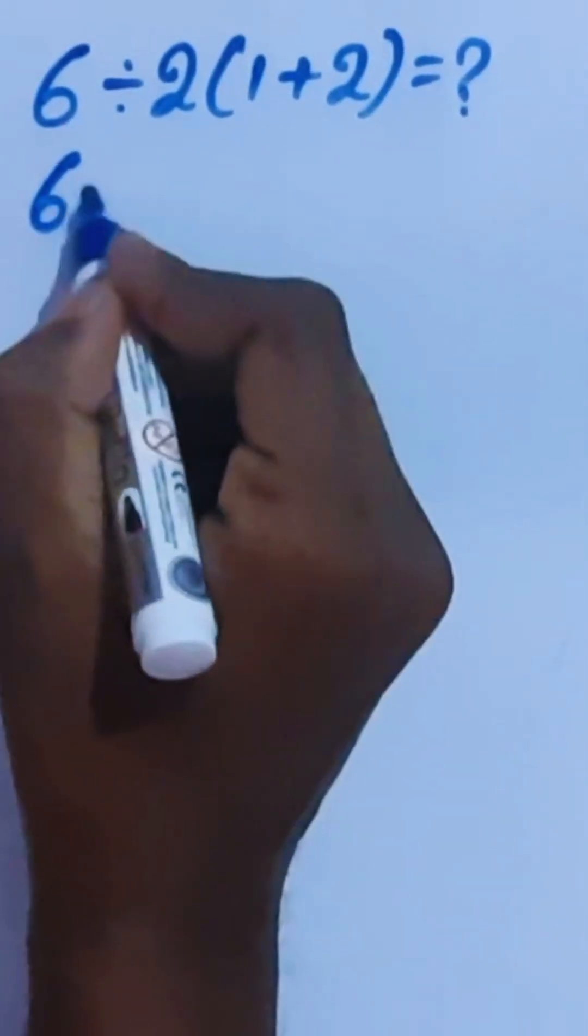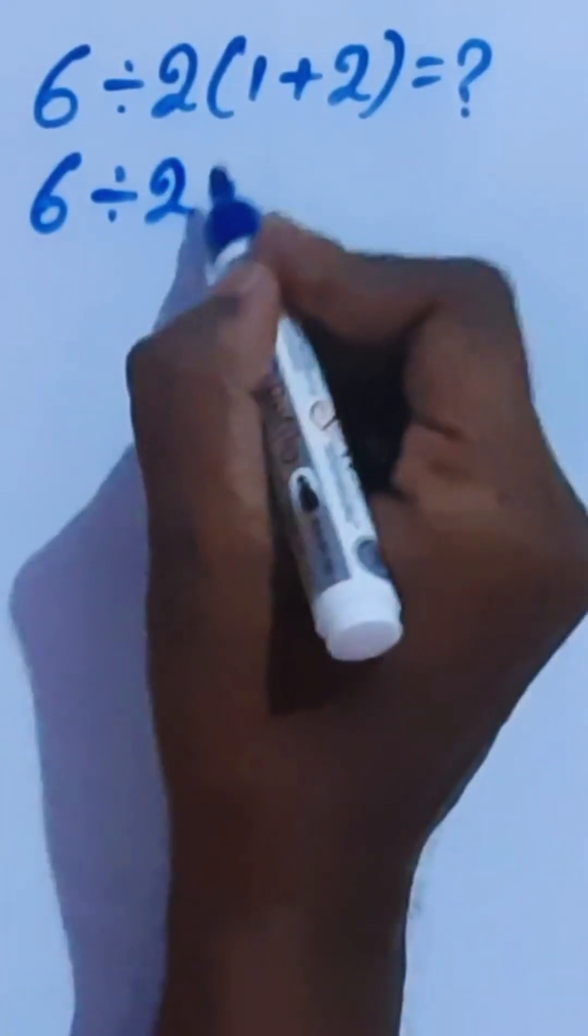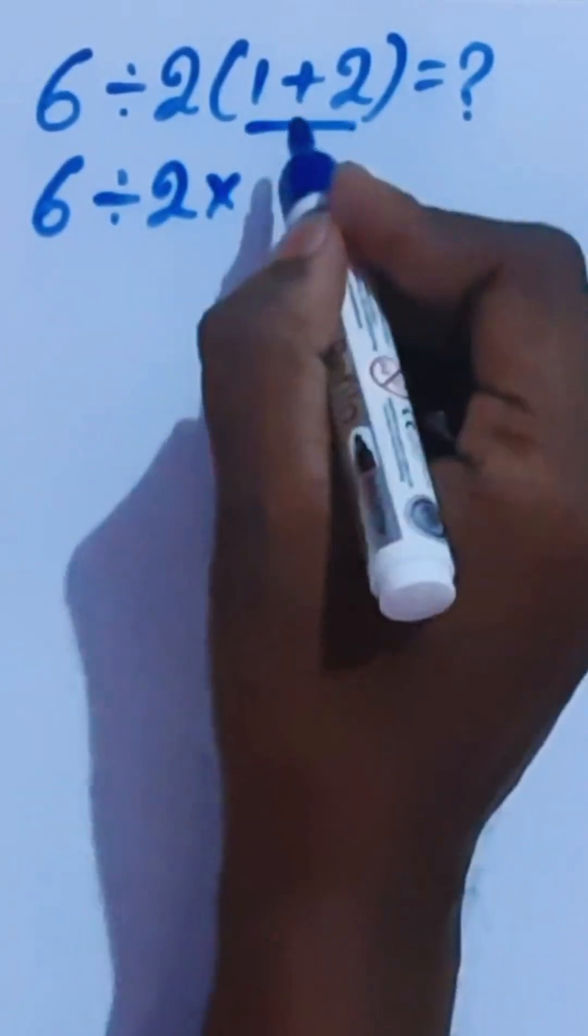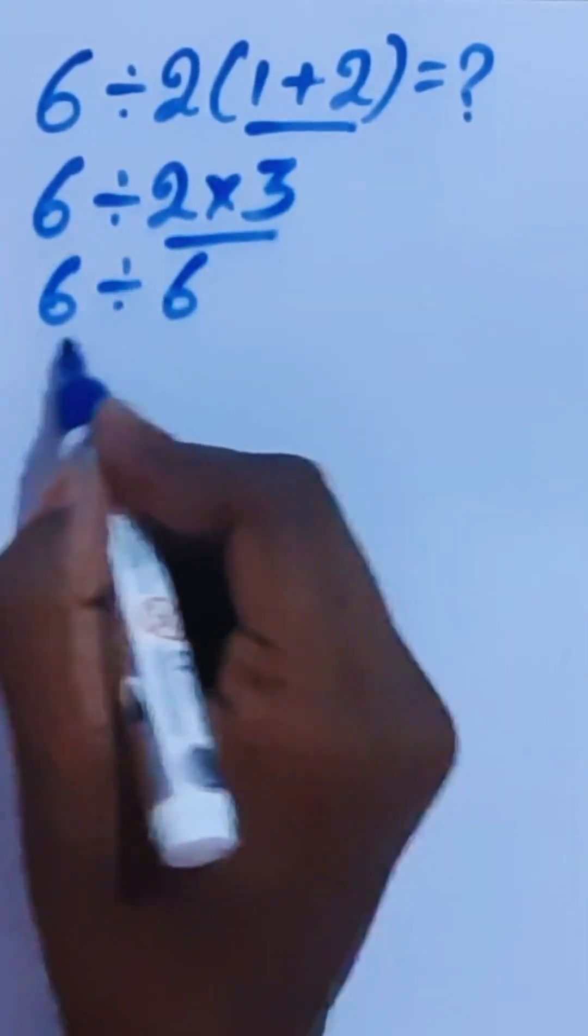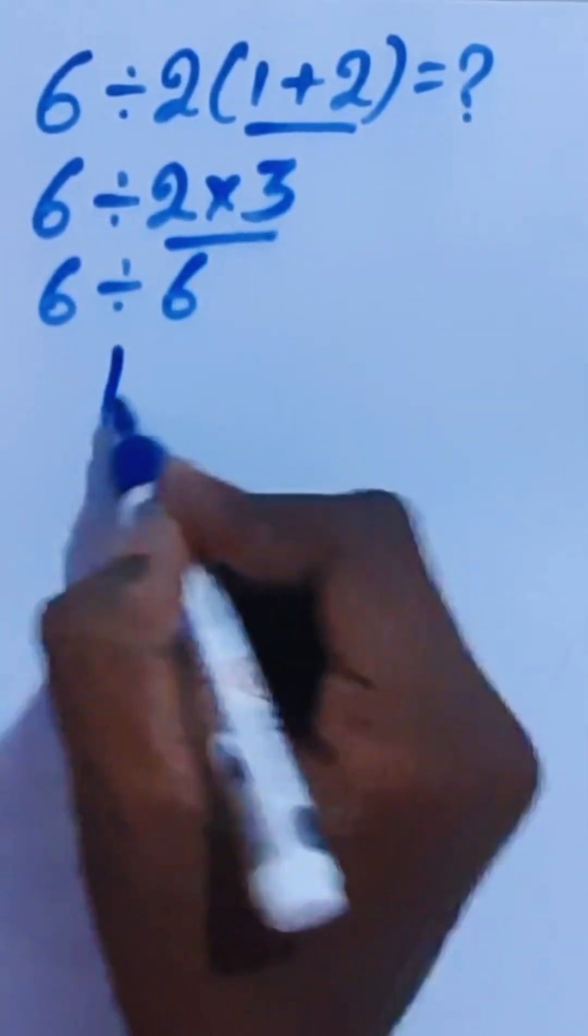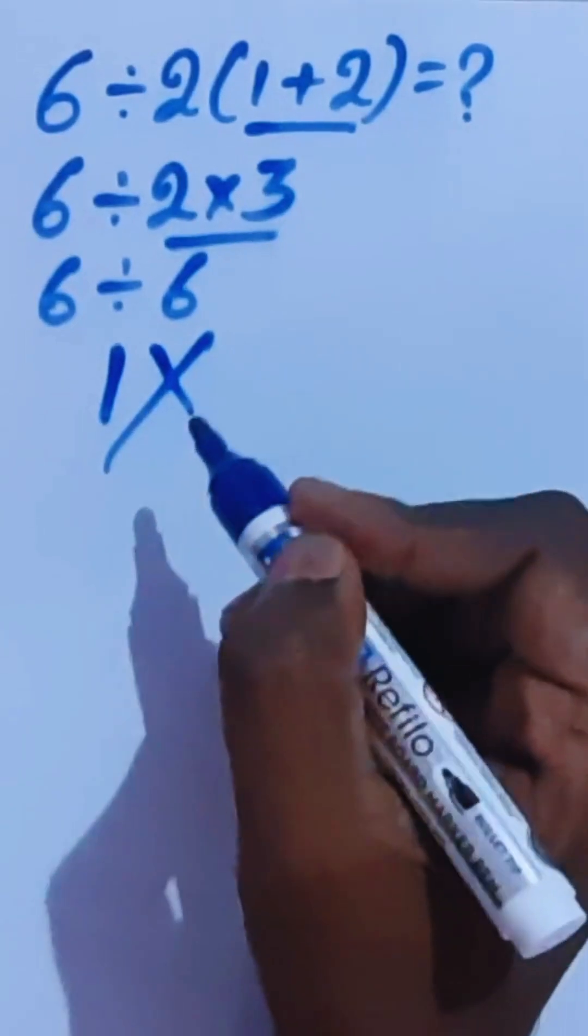Here's 6 divided by 2 times (1+2). First, 1 plus 2 equals 3, giving us 6 divided by 2 times 3. If we calculate 2 times 3 as 6, then 6 divided by 6 equals 1—but this is the wrong answer according to the order of operations.